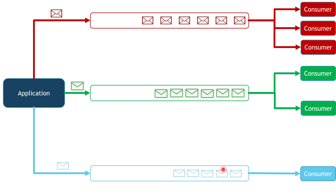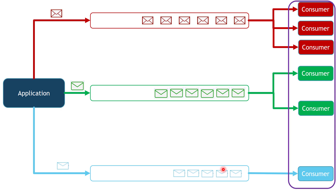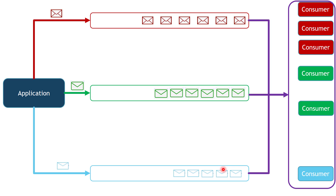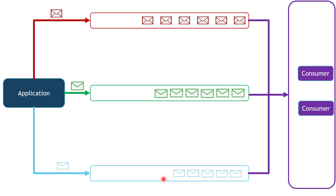If having multiple dedicated consumers is too much, you can put all consumers in a pool. Instead of each consumer pulling from a specific queue, all consumers pull from all queues simultaneously — but with a condition: you cannot process messages from the low or medium priority queue as long as there are messages in the high priority queue. You must process all high priority messages first. This way you can have identical consumers that scale up and down based on your requirements and workload.